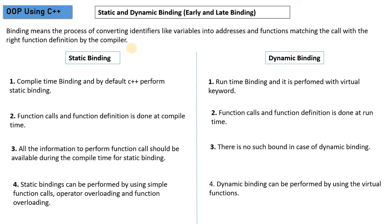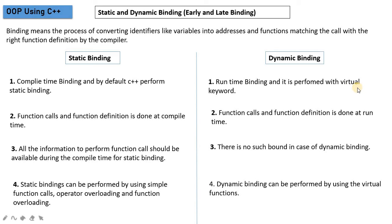By default, C++ uses static binding. Static binding is compile-time binding — variables and functions are defined and connected before the program runs, at compile time. Dynamic binding happens at run time. Because dynamic binding is not the default, we use a different keyword, which we call 'virtual'.